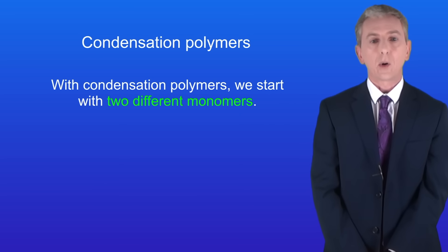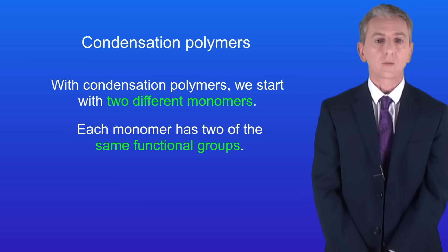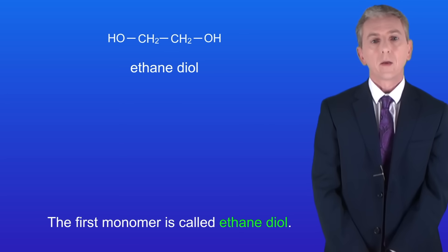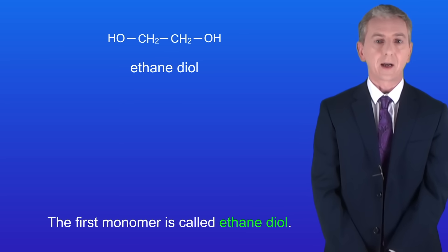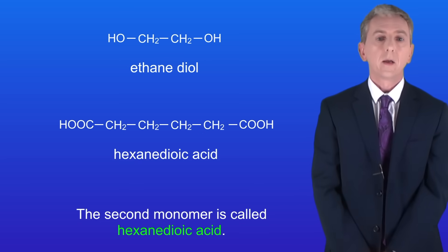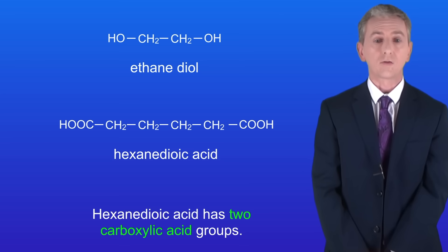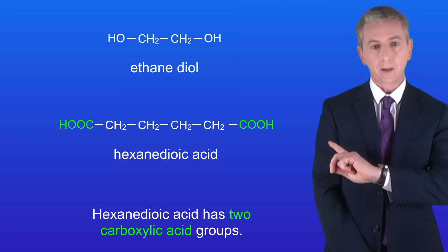The first key point is that with condensation polymers we start with two different monomers, and each monomer has two of the same functional groups. The first monomer is called ethane diol. Ethane diol has two alcohol groups, as you can see here. The second monomer is called hexane diolic acid, which has two carboxylic acid groups, as we can see here.